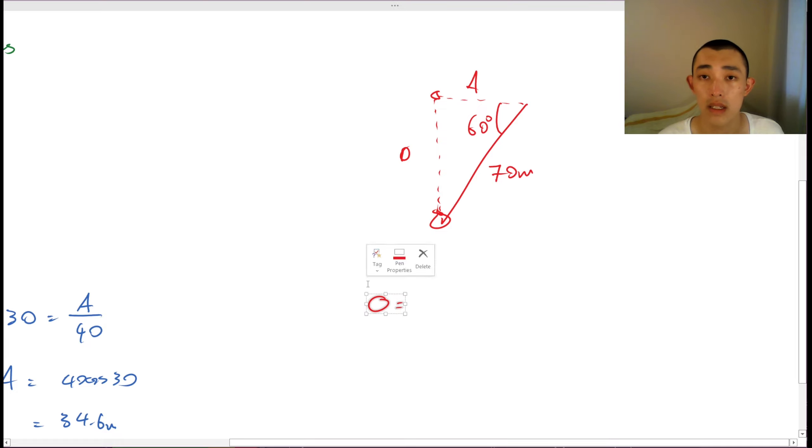So opposite is equal to 70 sine 60. Or I can convert that. 61 meters.